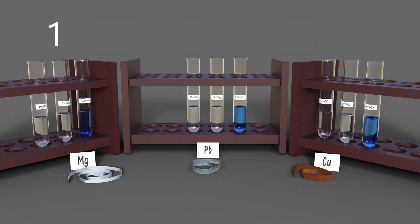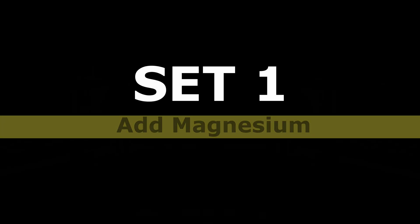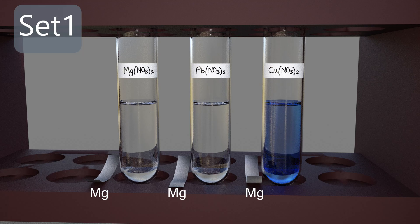Each set will be added with a magnesium ribbon, a lead strip, and a copper strip. Prepare three pieces of magnesium ribbons and add the magnesium ribbons into all three test tubes of set one, and observe.